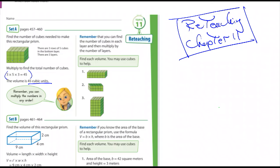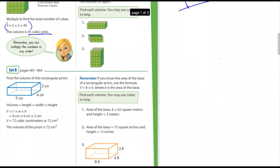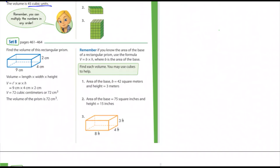They give you three others to do, and as always they give you the page numbers for the section that went over that. Set B is more of the same: length times width times height. In number one and number two, they're giving you the area of the base, which is then multiplied by the height.